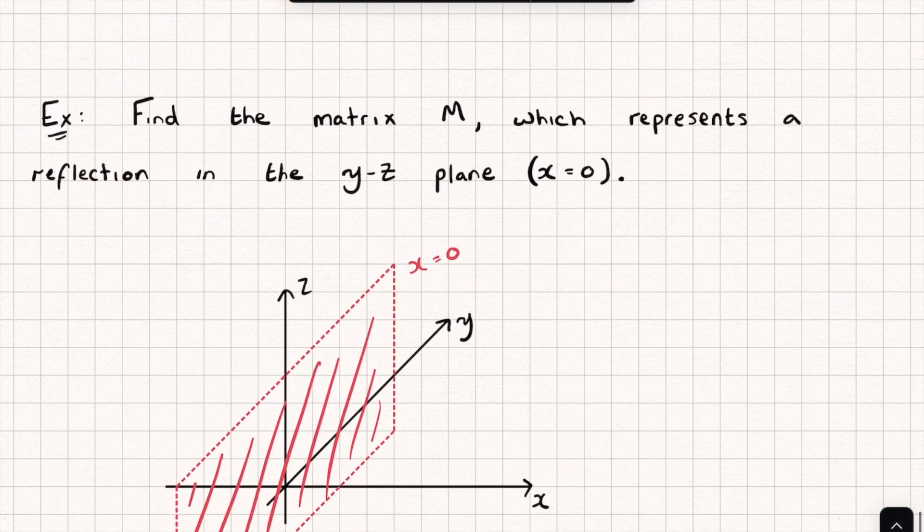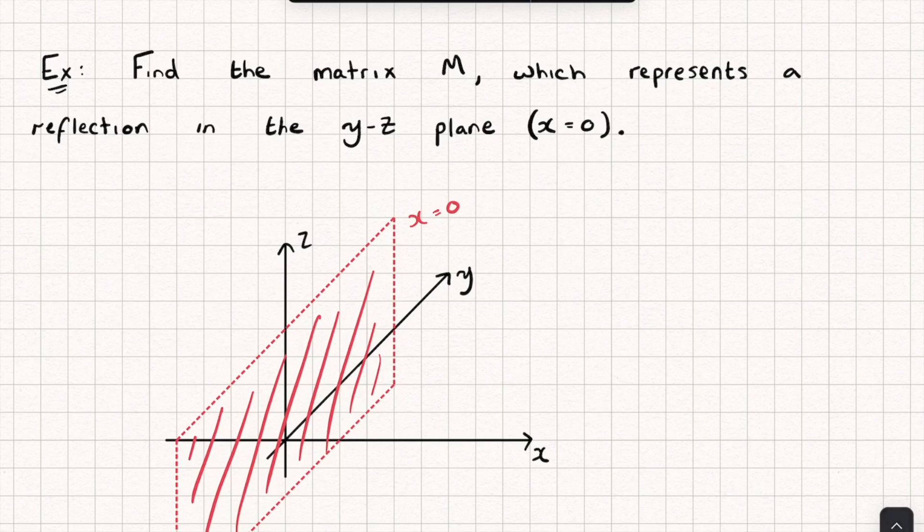Let's now look at this second example where we want to look at a reflection in the YZ plane or the plane X equals zero. So again let's repeat this process. I'm going to plot my points (1,0,0) over here. We've got (0,1,0). Hopefully this is kind of clear. My pictures aren't perfect here. And (0,0,1). So let's see what's going to happen.